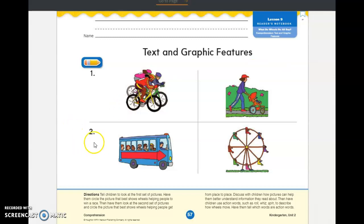All right, by number two. Look at this set of pictures. Here's a bus with people on it. Here is a ferris wheel. Circle the picture that shows wheels are helping people get from place to place. Where are the wheels helping people get from one place to another place?